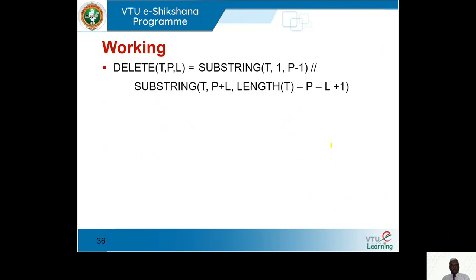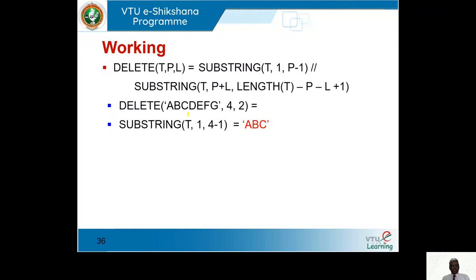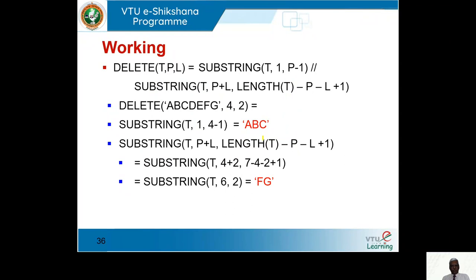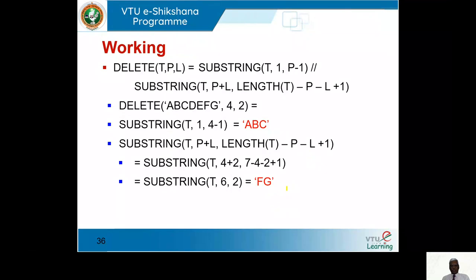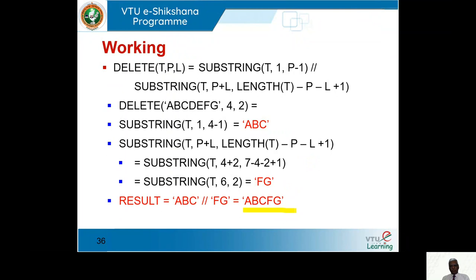That is exactly what this slide explains. The same formula is repeated. The first substring starts from position 1 to P minus 1. The second substring starts from P plus L, with the remaining length calculated using the formula. We get two characters F, G and finally the concatenated result is A, B, C, F, G.